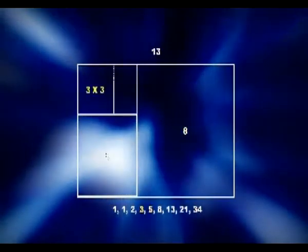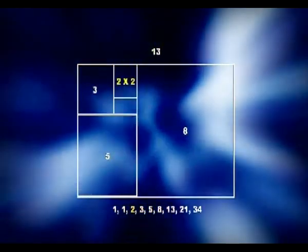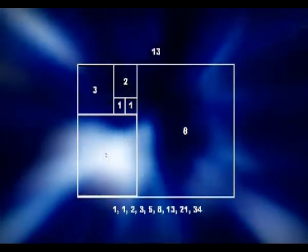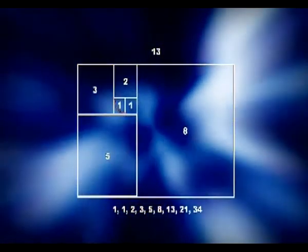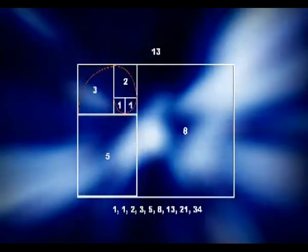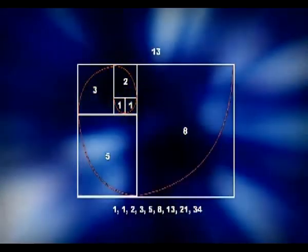A golden rectangle can be broken down into squares the size of the next Fibonacci numbers down and below. If we were to take a perfect or golden rectangle, break it down into smaller squares based on Fibonacci's sequence and divide each with an arc, the patterns begin to take shape. We begin to see Fibonacci's spiral.